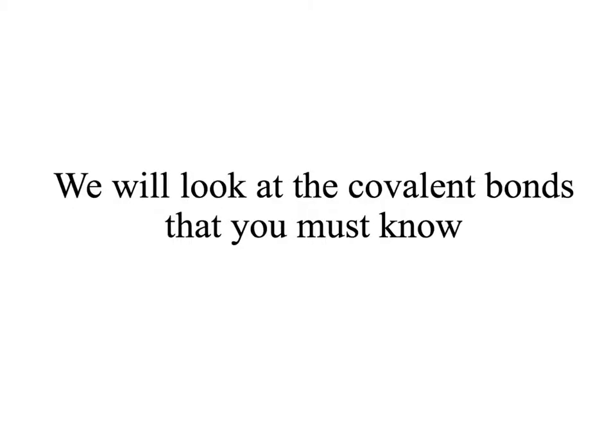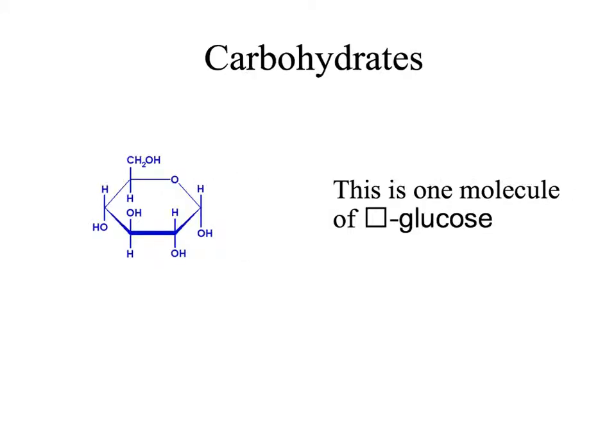We'll now go through the covalent bonds again in more detail, looking at the specific examples that you have to know. Starting with the glycosidic bond, which forms between two monosaccharides.